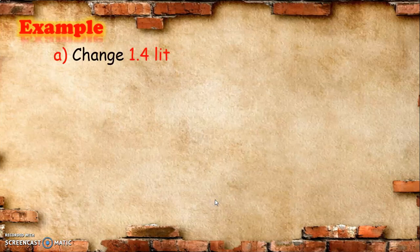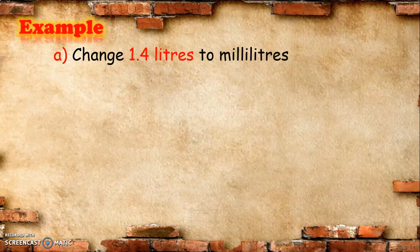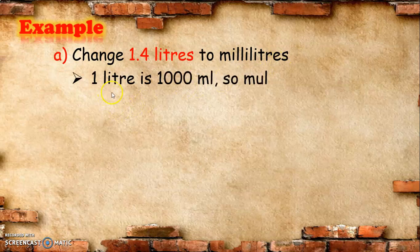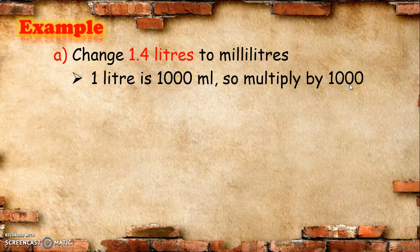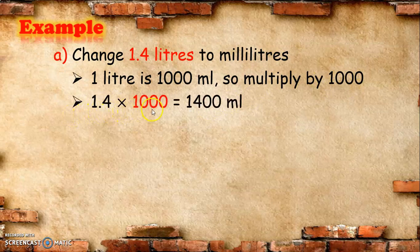First, change 1.4 liters to milliliters. Since 1 liter is equal to 1,000 ml, we multiply by 1,000. So, 1.4 times 1,000 is equal to 1,400 ml.